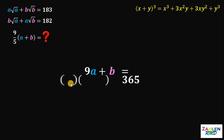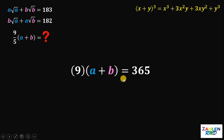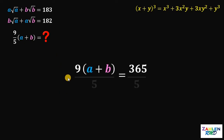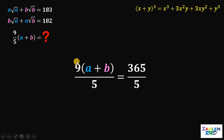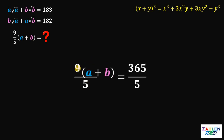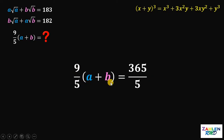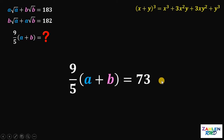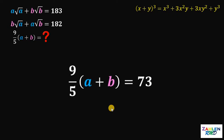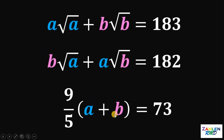So our equation now becomes 9 times (A plus B) equals 365. We want the value of 9 over 5 times (A plus B), so we divide both sides by 5. On the left-hand side, 9 times (A plus B) over 5 can be written as 9 over 5 times (A plus B), and 365 divided by 5 is 73. Therefore, the value of 9 over 5 times the sum of A and B equals 73.